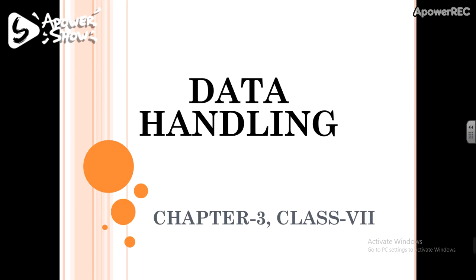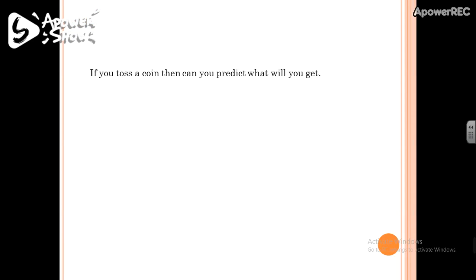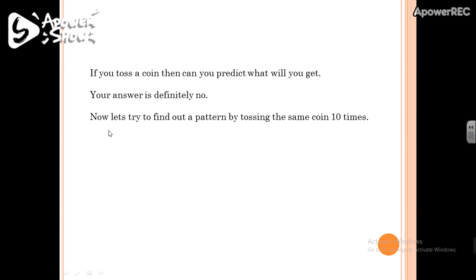To know about it, just answer the following question: if you toss a coin, then can you predict what you will get? I think no one can predict what we will get after tossing a coin. Now let's try to find out a pattern by tossing the same coin 10 times.